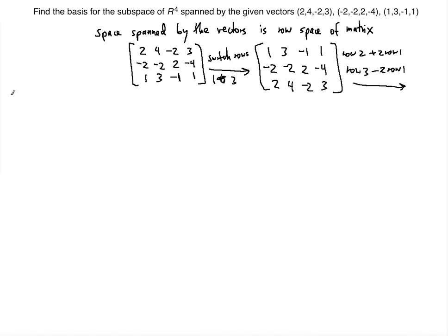Okay, so as a result we have this: 1, 3, -1, 1. This becomes zero and then we have 4, 0, -2, and I'm getting these numbers by adding to the second row twice the first row.